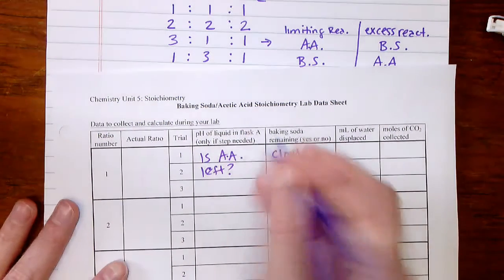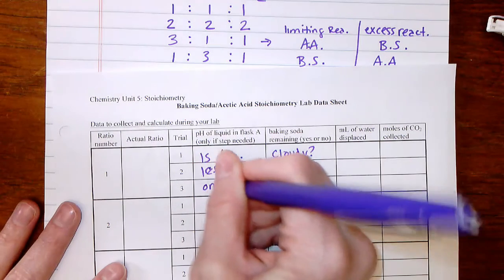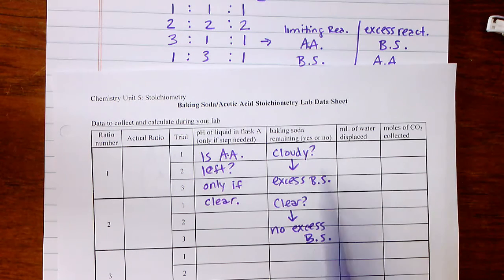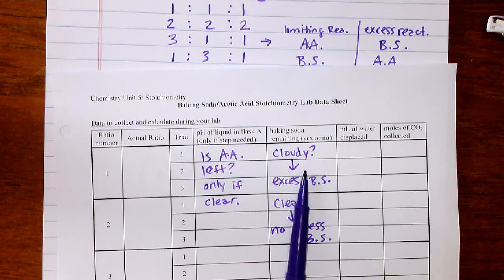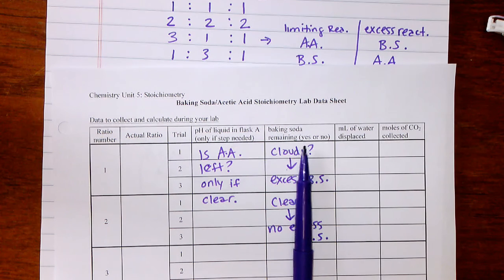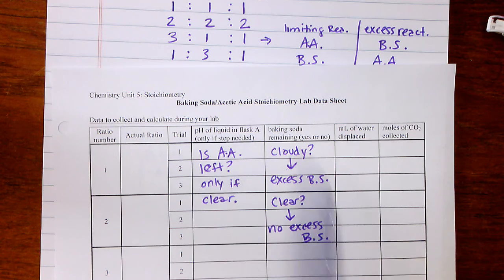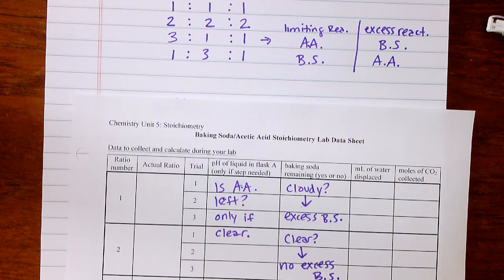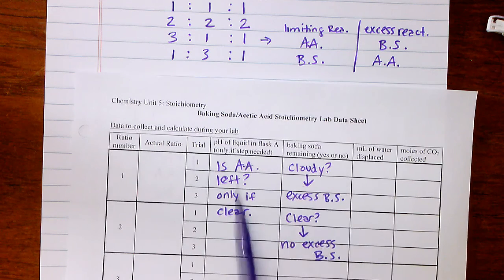You should only be checking pH if the solution was clear, not if it was cloudy — because if it's cloudy, there's still baking soda left. You then need to think through whether your answer here is consistent with what the ratio tells you about what you should have extra of, and compare your pH answer to what the ratio predicts as the excess reactant.